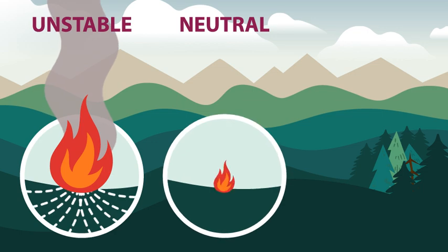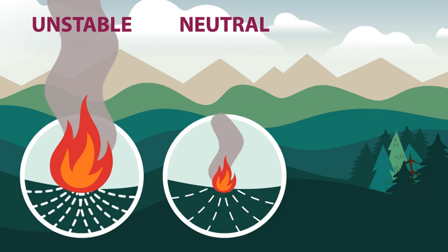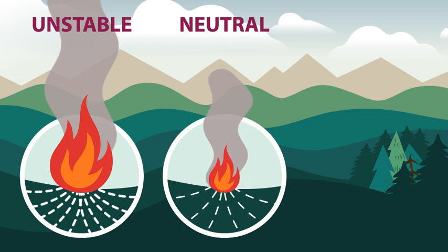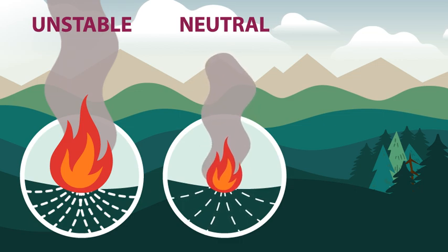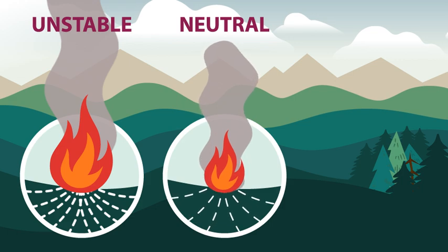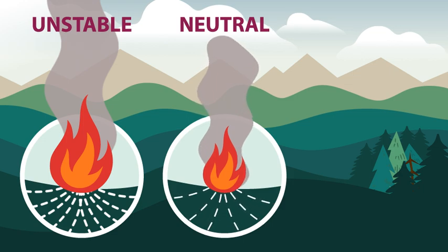A neutrally stable atmosphere neither supports nor discourages rising air. If a fire occurs in a neutrally stable environment, the hot air above the fire will continue to rise because the atmosphere is not discouraging this motion. It may not rise as fast as an unstable environment, but the air will nonetheless still freely rise. Thus, strong indrafts can still occur and the fire will have increased oxygen, supporting further growth. And a large fire plume can still develop.